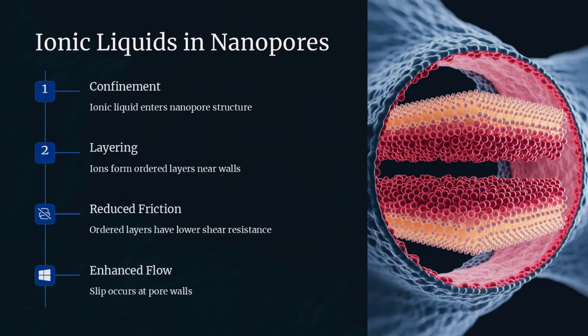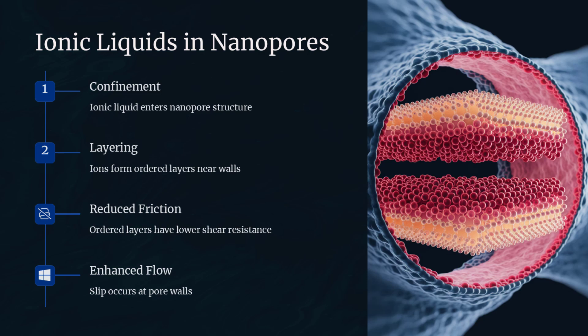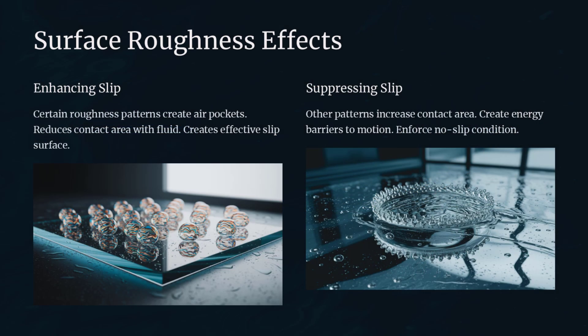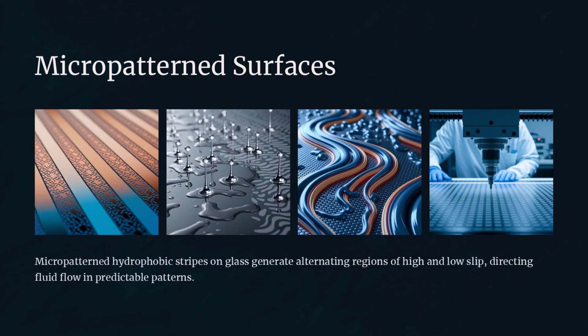Surface roughness at the nanoscale can either enhance or suppress slip, depending on the interplay with fluid structuring. Hydrophobic coatings tend to amplify slip by repelling water and creating vapor pockets, while hydrophilic groups increase friction but do not eliminate slip entirely. Chemical heterogeneity can localize slip to specific domains, making the overall boundary behavior highly non-uniform. Tailoring surface treatments thus provides a means to control slip in microfluidic devices. Micropatterned hydrophobic stripes on glass generate alternating regions of high and low slip, directing fluid flow — like walking on a floor with alternating patches of ice and carpet, where stride length varies dramatically between regions.